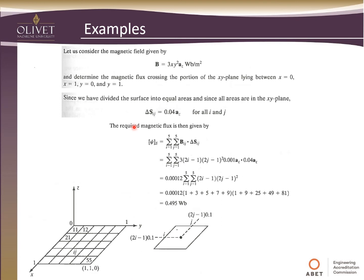So continuing on, since we divided the surface into equal areas, and since all areas are in the xy plane, then our delta S, our incremental areas, are all going to be 0.04. So we get that because, remember, we said this is 0.2, and this is 0.2, since we divided 1 by 5 equally. So when you multiply 0.2 times 0.2, you get 0.04, and it's all in the a_z direction.